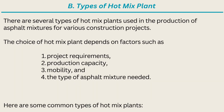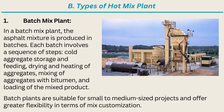B) Types of hot mix plant. There are several types of hot mix plants used in the production of asphalt mixtures for various construction projects. The choice depends on factors such as project requirements, production capacity, mobility, and the type of asphalt mixture needed. Type one, batch mix plant — the asphalt mixture is produced in batches, with each batch involving cold aggregate storage and feeding, drying and heating of aggregates, mixing of aggregates with bitumen, and loading of the mixed product. Batch plants are suitable for small to medium sized projects and offer greater flexibility in mix customization.